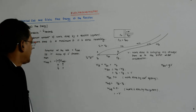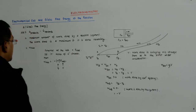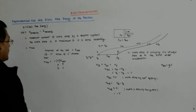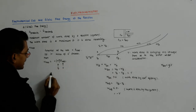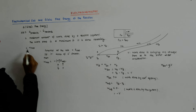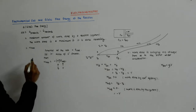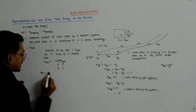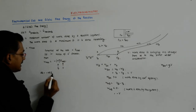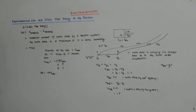We see what our W_max is. W_max is equal to minus nFE_cell, and we have seen that ΔG is equal to that. So we say that ΔG is equal to minus nFE_cell.